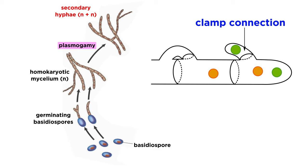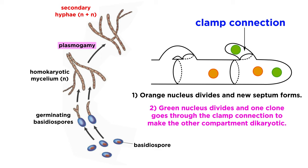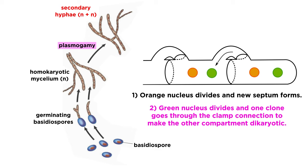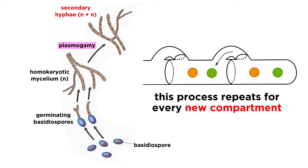The hyphae get around this problem, quite literally, through the creation of clamp connections. As one of the nuclei divides and forms a dollypore septum, the other nucleus divides and transfers one of the clones to a small hyphal branch called a clamp. This clamp connects the two compartments but forms a septum that blocks the cloned nucleus from rejoining the original compartment. Then the cloned nucleus is transferred to the new compartment. This process is repeated for each hyphal compartment, and the resulting structure is known as a dikaryotic or heterokaryotic mycelium.